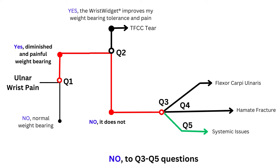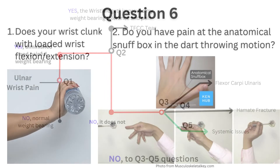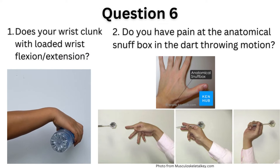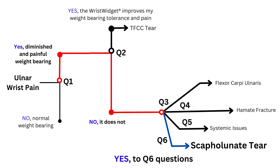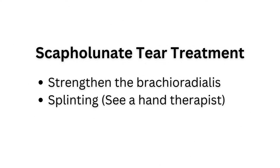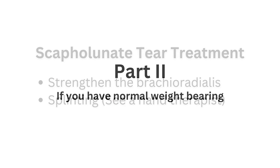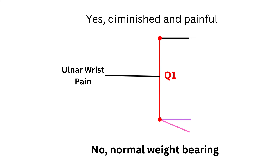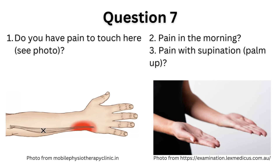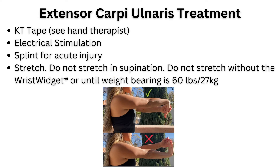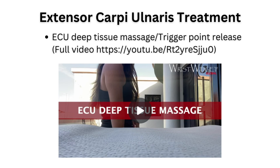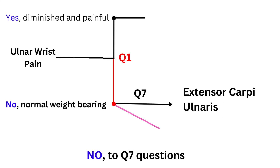If your answers were no for questions three to five, move on to question six. If you answered no to question one, skip to part two and start with question seven. If your answers were no to question seven, move on to question eight.